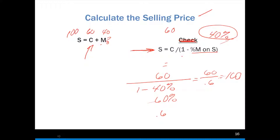Think about the relationship. The other formula was cost times (1 plus the percent markup on cost). This one is divided by (1 minus the percent markup on selling price). I have my cost of 60, and I'm dividing — subtracting instead of multiplying — which allows me to end up with a number larger than 60. As you can see, 60 divided by 0.6 gives me 100. Memorize the formula, but understand what's going on, because in both instances we're calculating the selling price.